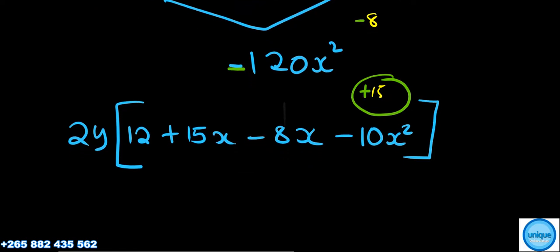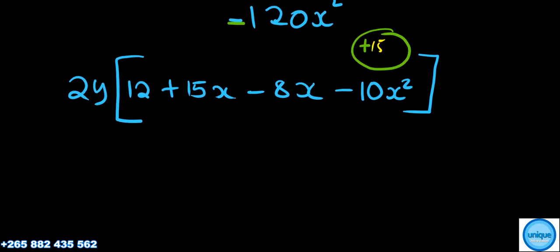Now the next thing you do, we need to pair them. So if you pair them, you have 2y, then in the bigger bracket you have a bracket here, and we can just group them in a bigger bracket like that.